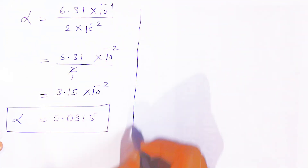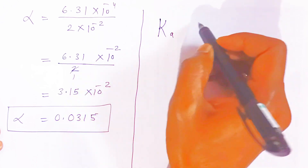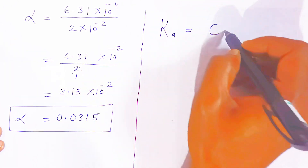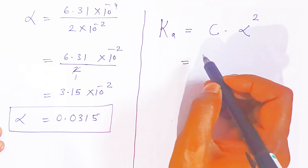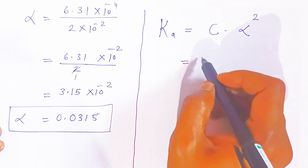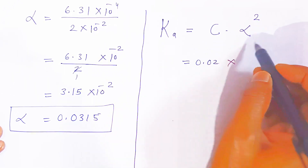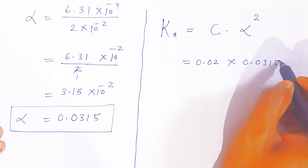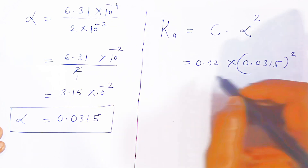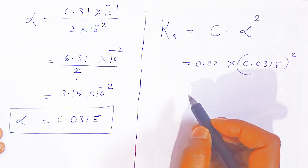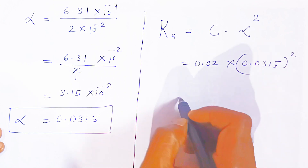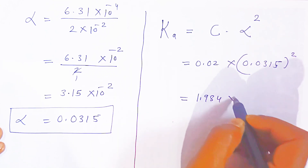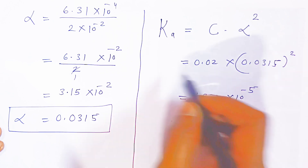The dissociation constant Ka = C × α² = 0.02 × (0.0315)². Using the log table to calculate (0.0315)², the result comes out to approximately 1.984 × 10⁻⁵. So Ka ≈ 1.984 × 10⁻⁵.